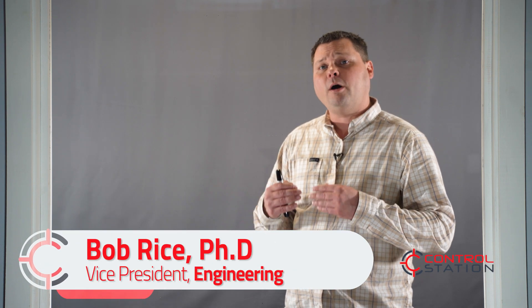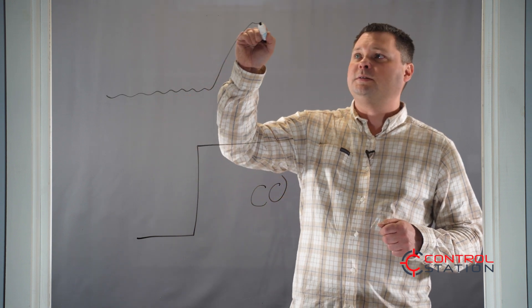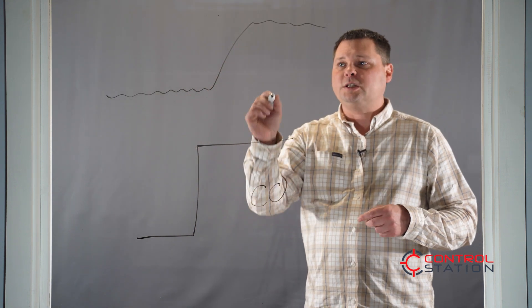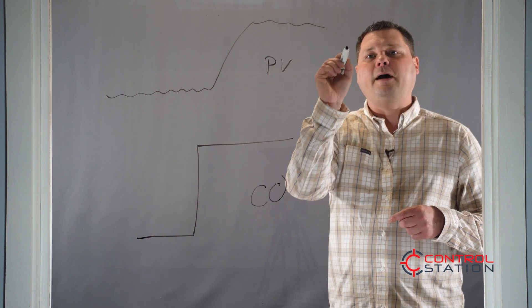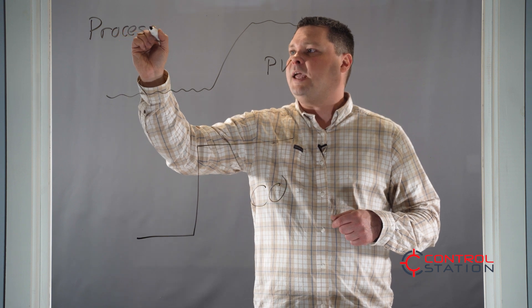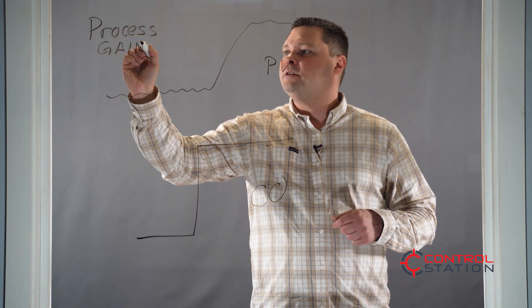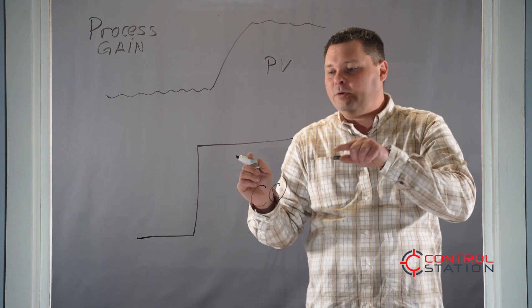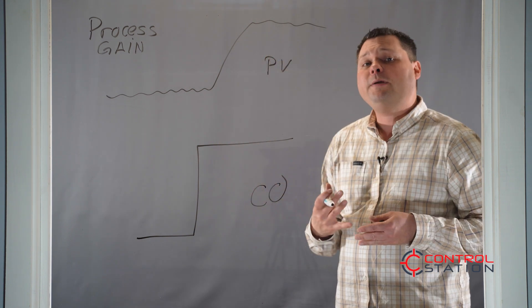Hello, I'm Bob Rice and in this episode we're going to continue our discussion of the process model for first order plus dead time systems. Recall in the last video we talked about trying to understand the relationship between when the controller output moves and the process variable response. In this episode I want to talk specifically about how to calculate this term called the process gain. The process gain tells us how far the process variable moves when we manipulate the output.